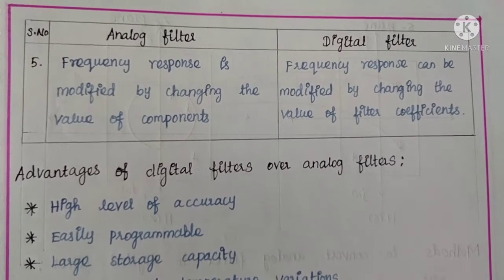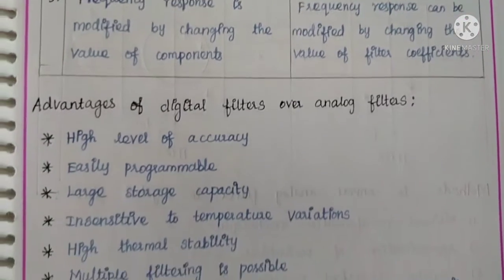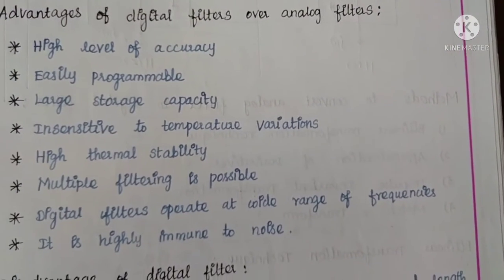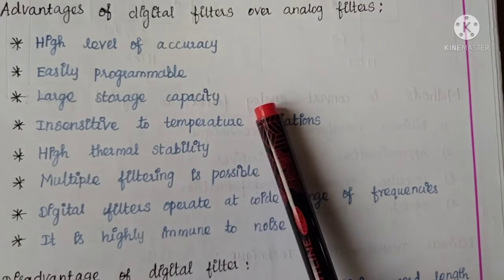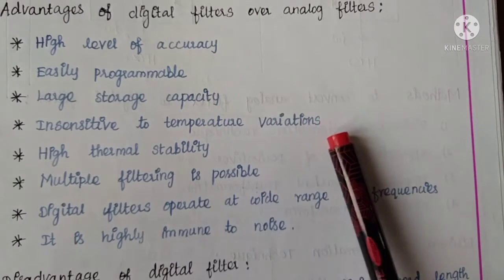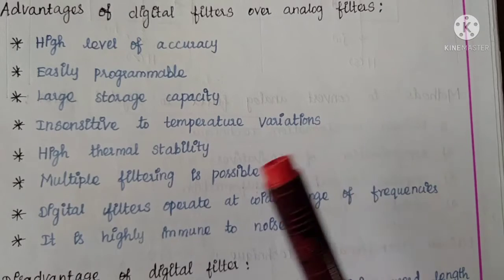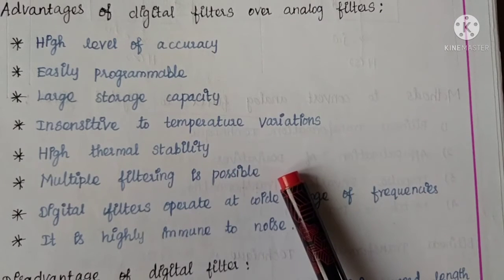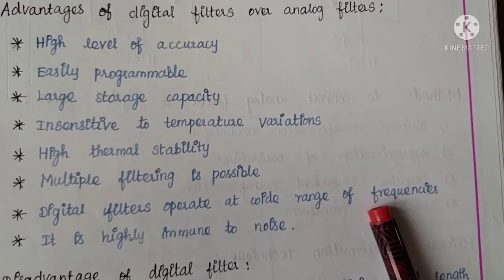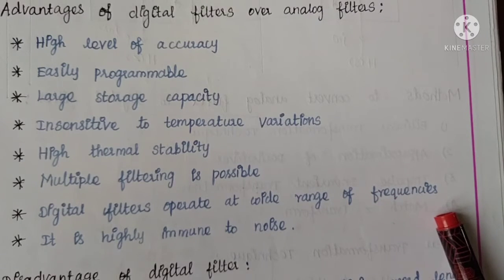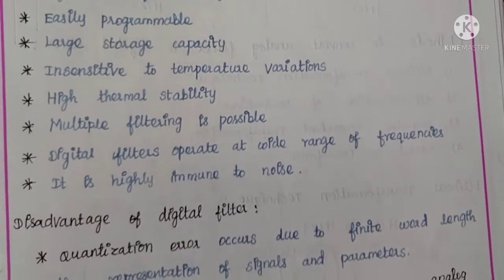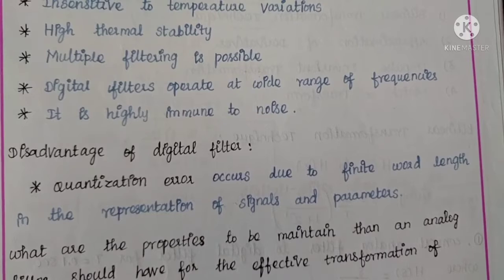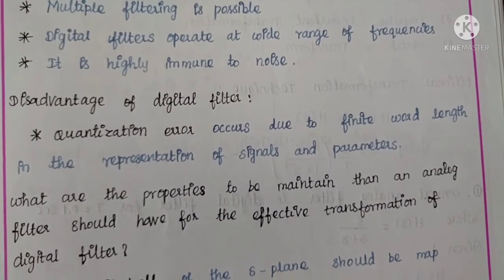Now we will see advantages of digital filter over analog filter. First advantage: high level of accuracy. Second: easily programmable. Third: large storage capacity. Fourth: insensitive to temperature variations. Fifth: high thermal stability. Sixth: multiple filtering is available. Seventh: digital filters operate at a wide range of frequencies. Eighth: it is highly immune to noise. These are the advantages of digital filters over analog filters.